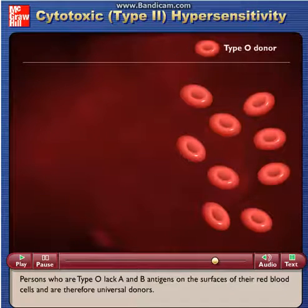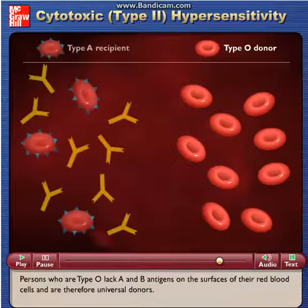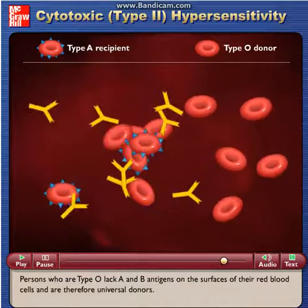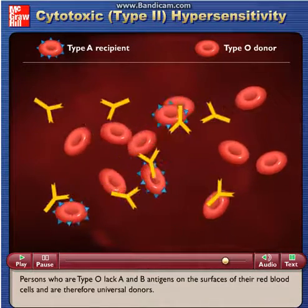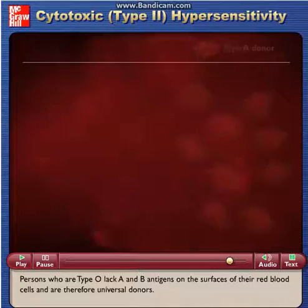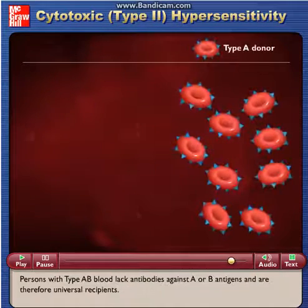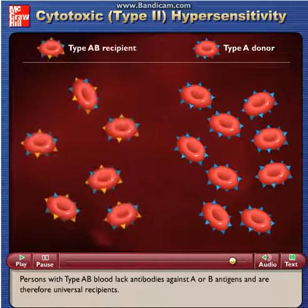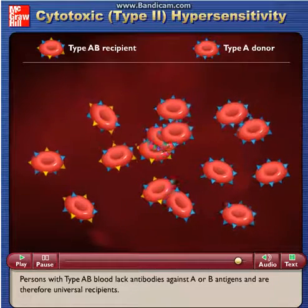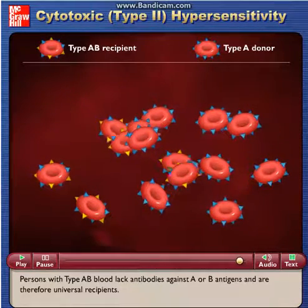Persons who are type O lack A and B antigens on the surfaces of their red blood cells, and are therefore universal donors. Persons with type AB blood lack antibodies against A or B antigens, and are therefore universal recipients.